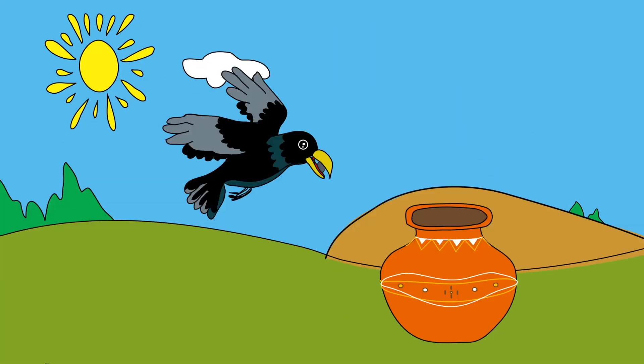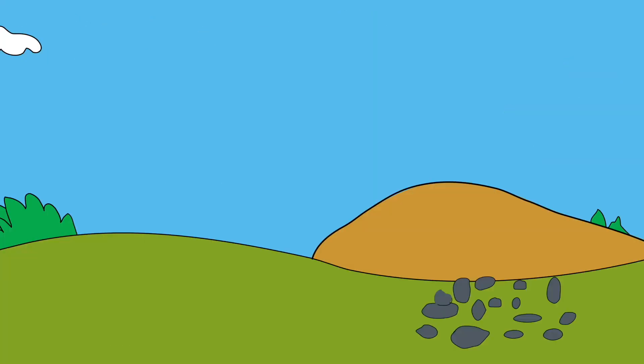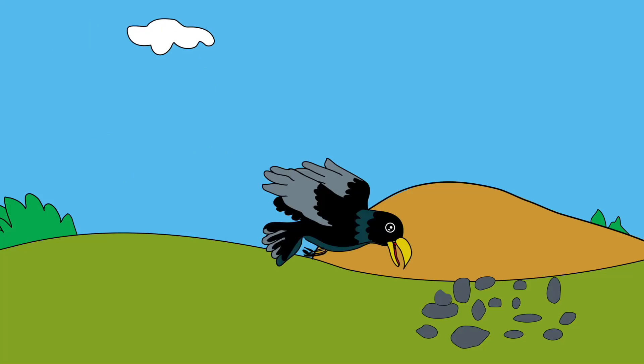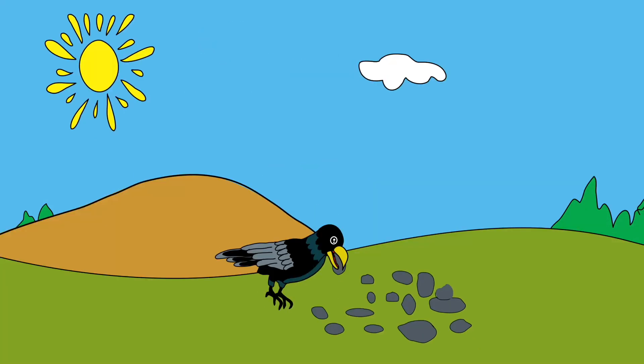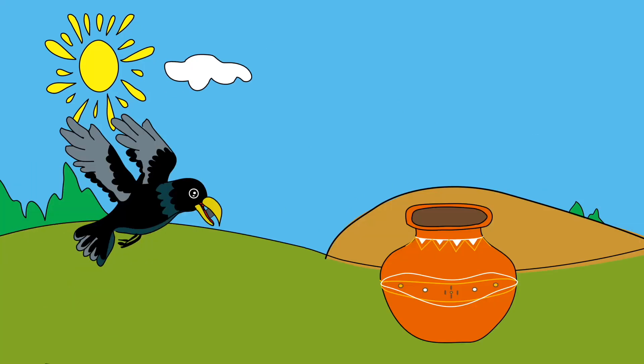The crow dropped more and more pebbles, each one contributing to the rising water level inside the pot. His beak worked swiftly, picking up pebble after pebble, until the once-empty pot was now filled with sparkling water, glistening in the sunlight.